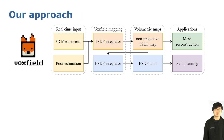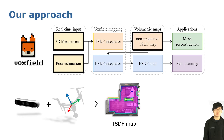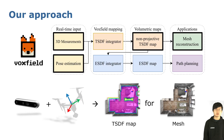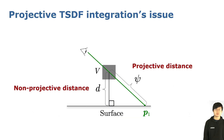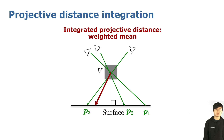We now briefly explain our approach, Vox Field. The input to the system is the 3D measurement and robot pose. Vox Field firstly builds a non-projective TSDF map from the inputs, and then reconstructs the 3D mesh from the TSDF map using the marching cubes algorithm. Our main improvement over the previous method is the non-projective TSDF integrator. Previous methods used projective TSDF integration, which is problematic. As shown in this figure, the robot takes an observation through voxel V and hits the surface at P1. The non-projective distance to the surface should be D, but the voxel V actually takes the projective distance as its signed distance value. Even by taking the weighted mean of the projective distance from different perspectives, the integrated value is still an overestimation.